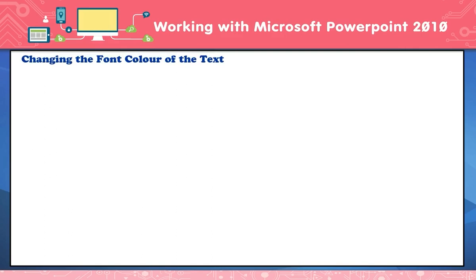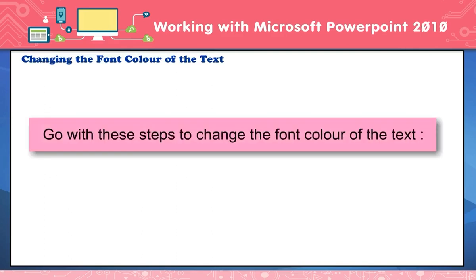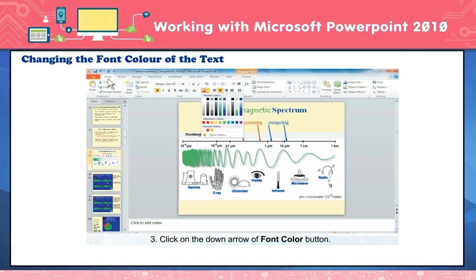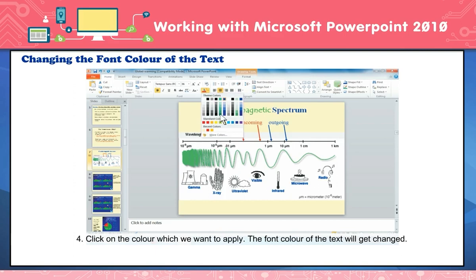Changing the font color of the text. To change the font color: select the text whose font color you want to change. Click on the Home tab. Click on the down arrow of the Font Color button. A color palette will appear. Click on the color you want to apply. The font color of the text will be changed.